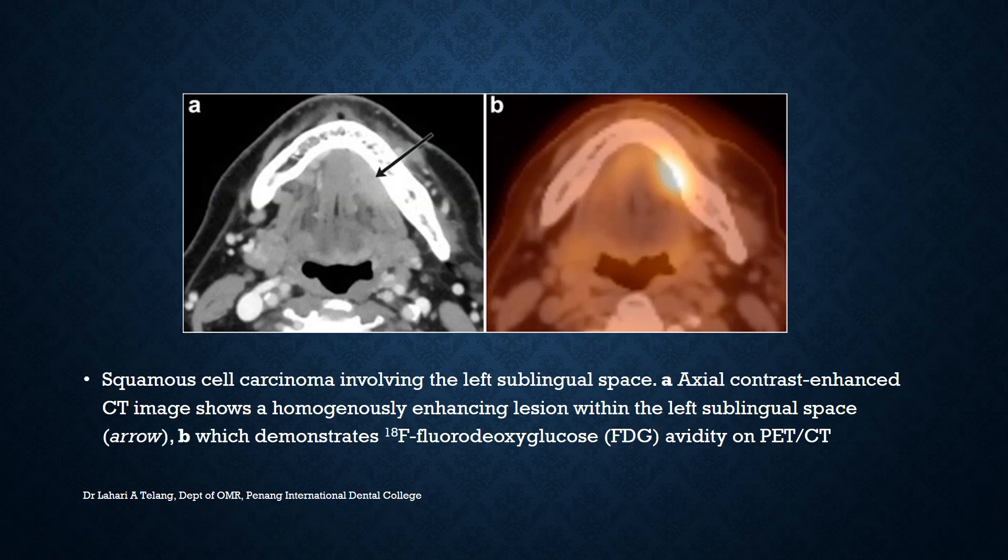CT scan can also serve as a scout image over which PET scans can be performed. This is an example of squamous cell carcinoma involving the left sublingual space; an axial contrast-enhanced CT image shows homogeneity along with the left sublingual space, and the corresponding PET-CT image is shown alongside.